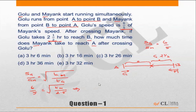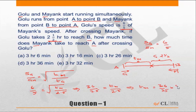Squaring both sides: 36/25 = T_M / 2.5. So time taken by Mayang = (36/25) × (5/2) = 36/10 = 3.6 hours, which is 3 hours and 36 minutes. Among the choices, the correct answer is choice G.